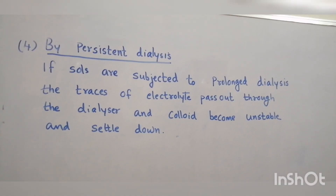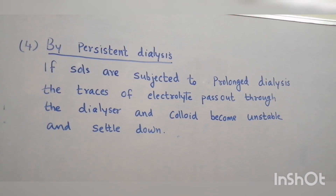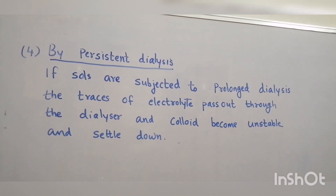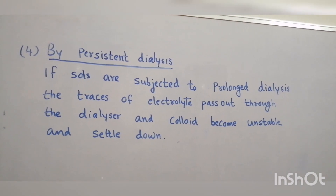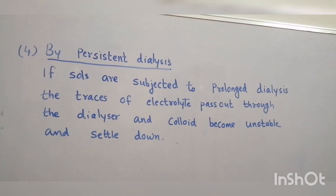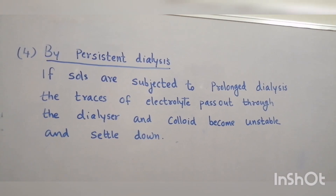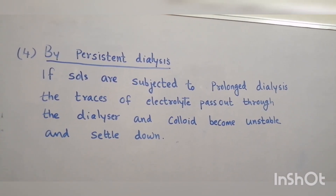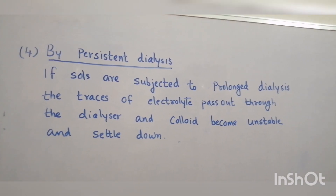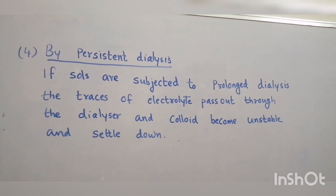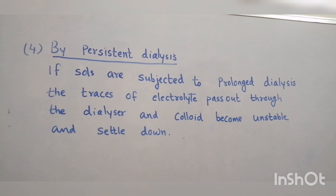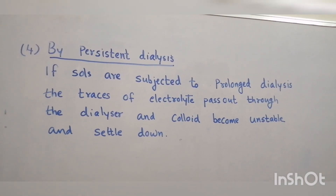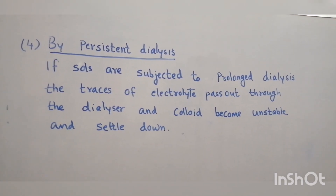Fourth method: by persistent dialysis. Traces of electrolytes are associated with the colloidal system and are essential for its stability. If the sols are subjected to prolonged dialysis, these traces of electrolytes pass out through the dialyzer and the colloids become unstable and settle down.